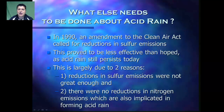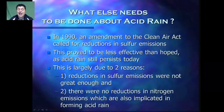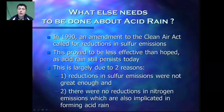So what can we do about acid rain? In the 1990s, an amendment to the Clean Air Act called for a reduction in sulfur emissions. Unfortunately, this proved to be less effective than hoped, as acid rain still persists today. This is largely due to two reasons: the reductions in sulfur emissions were probably not great enough, and there were no calls for reductions in nitrogen emissions, which are also implicated in forming acid rain.